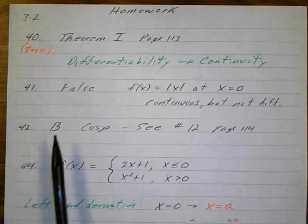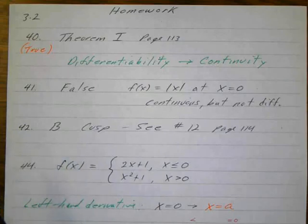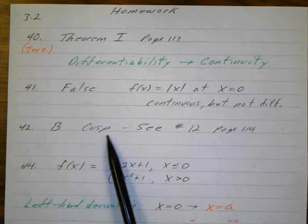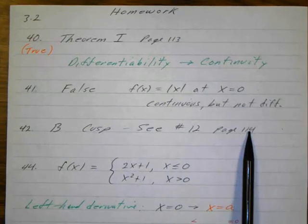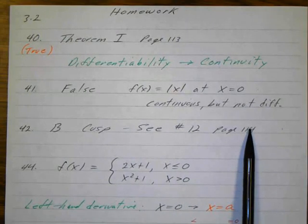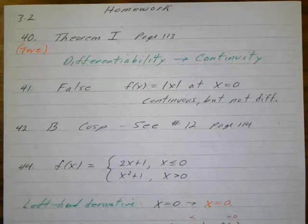Number 42. Which of the following is true about the graph of f of x equals x to the 4 fifths at x equals 0? It has a cusp. And we already did this problem, so you just have to see number 12 on page 114. We worked that out before and we got a cusp, so that's right there.